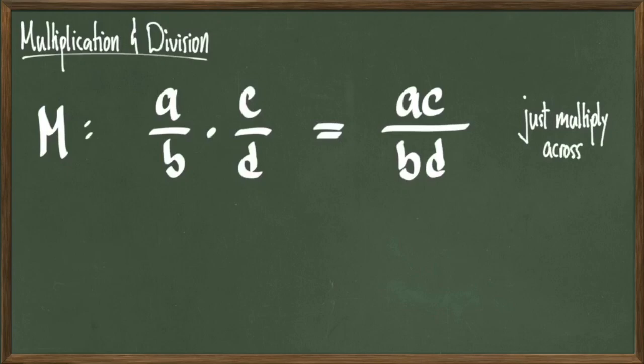It turns out that multiplication is about as straightforward as you can get. To multiply a over b by c over d, the fraction you get in return is a times c over b times d. So all you really have to do is just multiply across. Numerator times numerator over denominator times denominator.